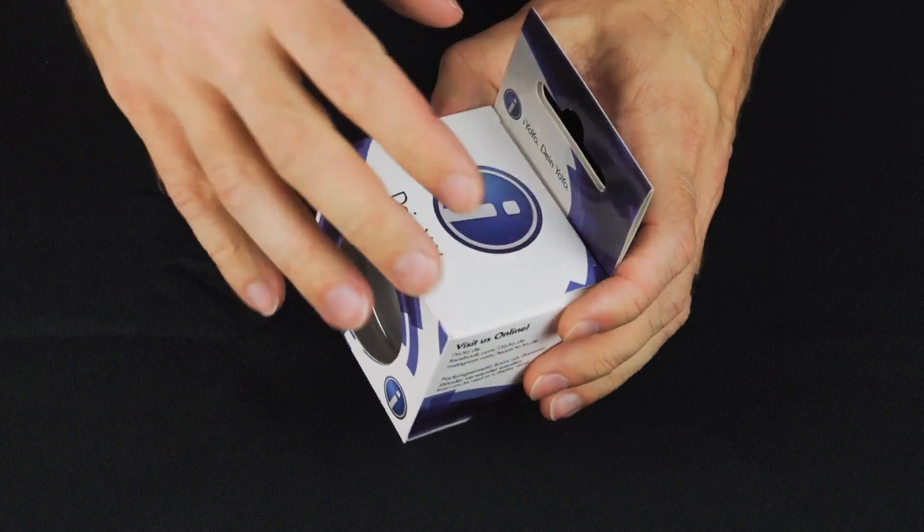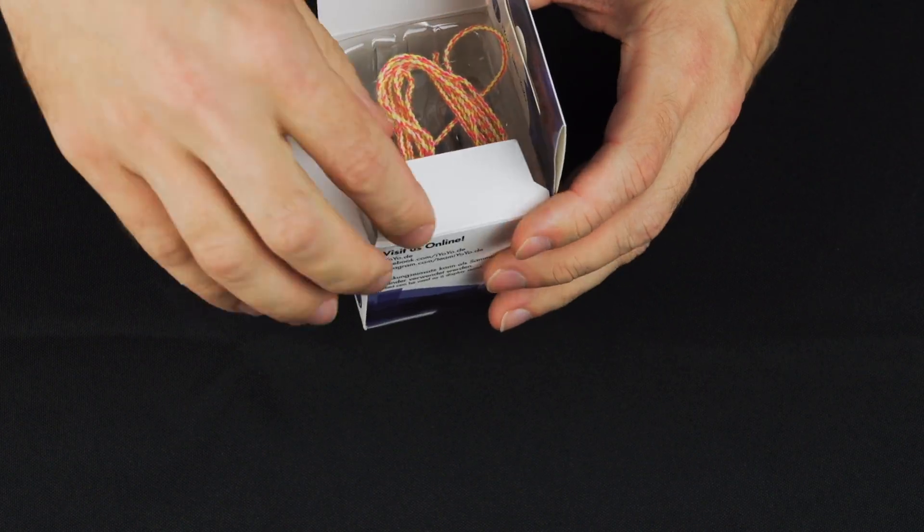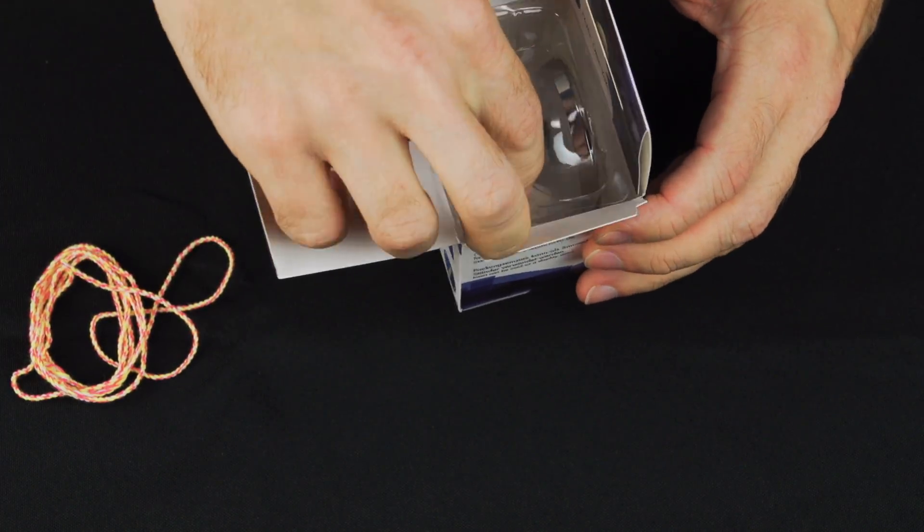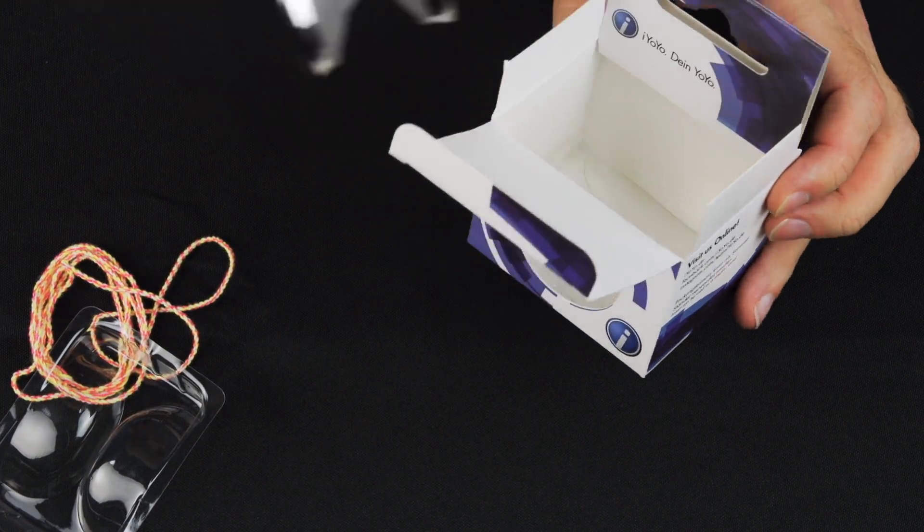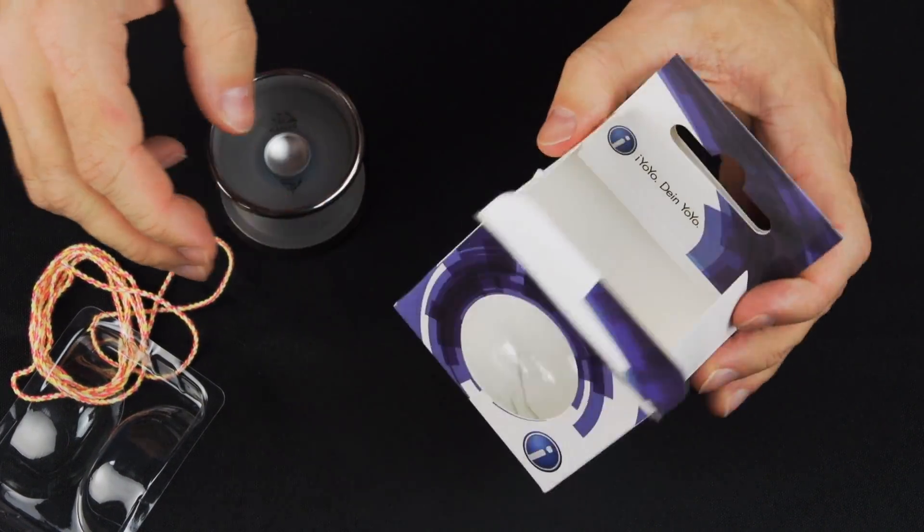As you can see it comes in the standard iYoyo box. It does come with a string, and it also comes in these nice plastic clamshells that help keep the yoyo safe while it's being transported. Pretty simple, elegant box design, but we like it.